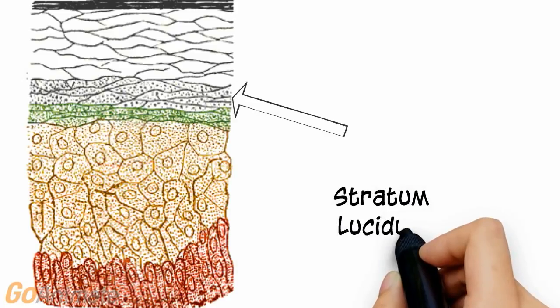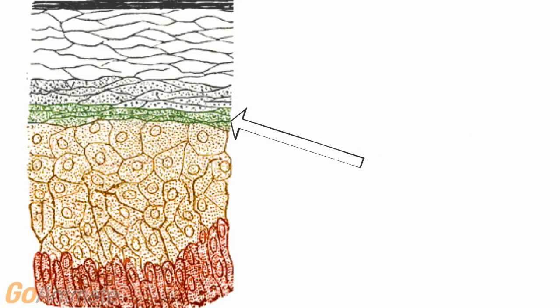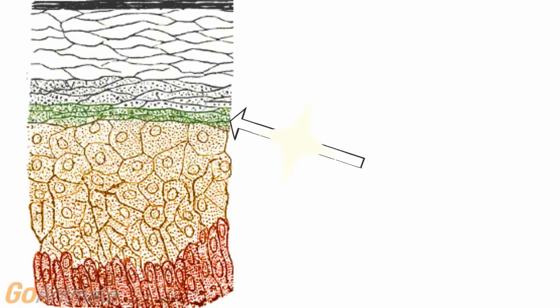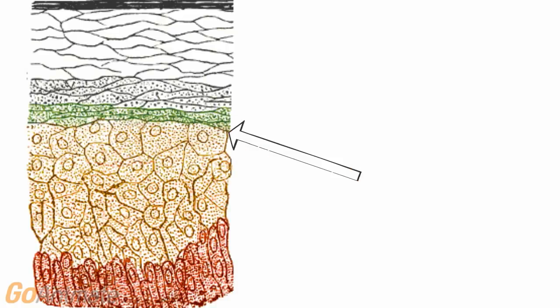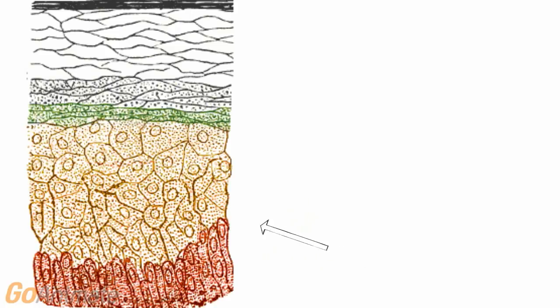The stratum lucidum is an additional layer that is found only in the palms of the hands and the soles of the feet. It provides added thickness to these layers. The stratum granulosum contains cells that have lost their nuclei. These cells remain active and secrete keratin. The stratum spinosum contains cells called prickle cells. These cells have small radiating processes that connect with other cells. Keratin is synthesized in this layer.